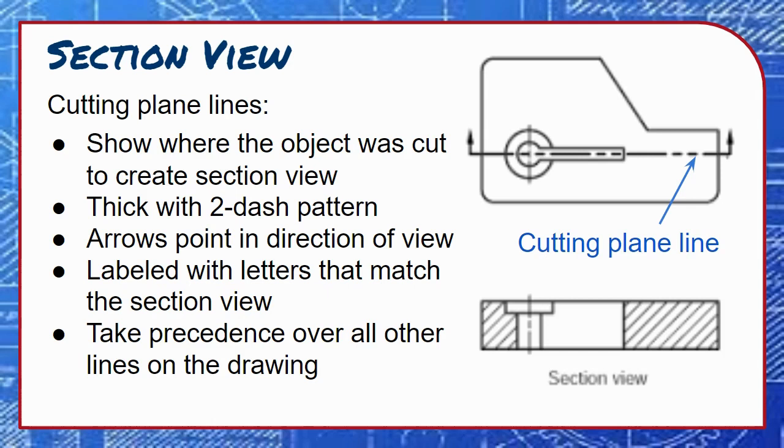Letters on the cutting plane line match letters on the section view it creates, which helps prevent mixing up views when multiple section views are created in the same drawing. These lines take precedence over all other lines on the page, so if they happen to fall in the same spot as an object line, the cutting plane line is what is seen and the object line falls behind.